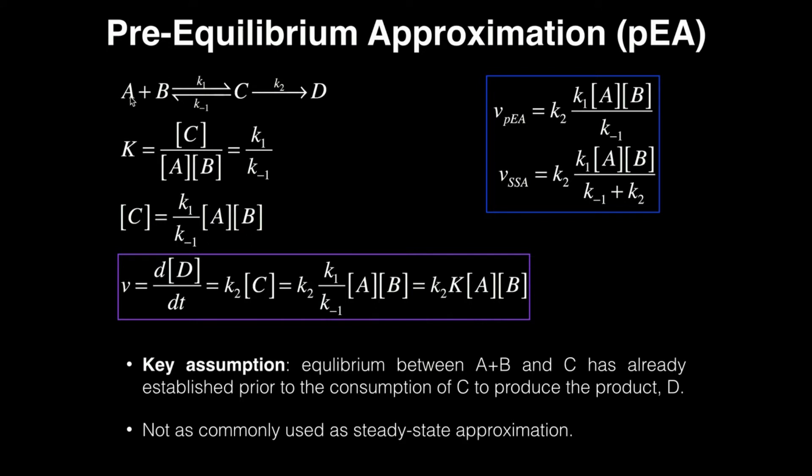So remember our equation. We have A plus B, our reactants or substrates, in equilibrium with C through the rate constants K1 and K-1 for the reverse reaction, and then C can be consumed in a one-way reaction to the product D through this rate constant K2.